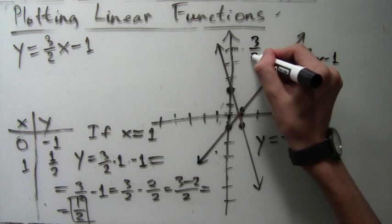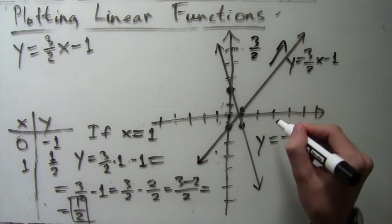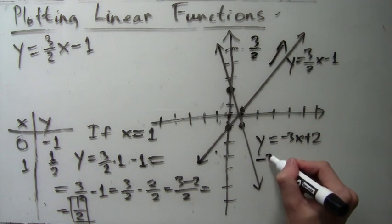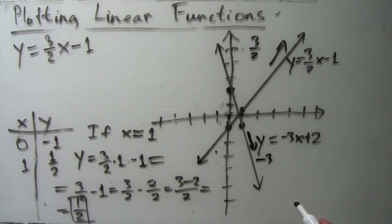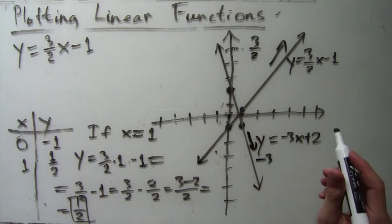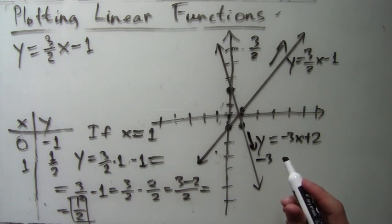Now you can see the clear contrast between the two lines. The one where x was multiplied by a positive number slopes up, while the one where x is multiplied by a negative number slopes down. So that's a topic for a future video lecture. Thank you for watching!